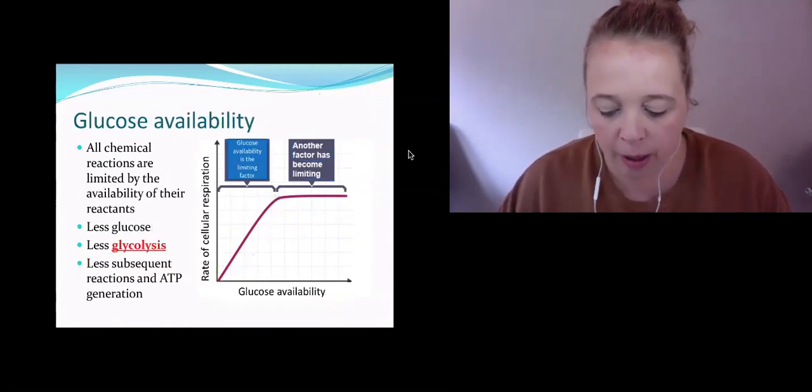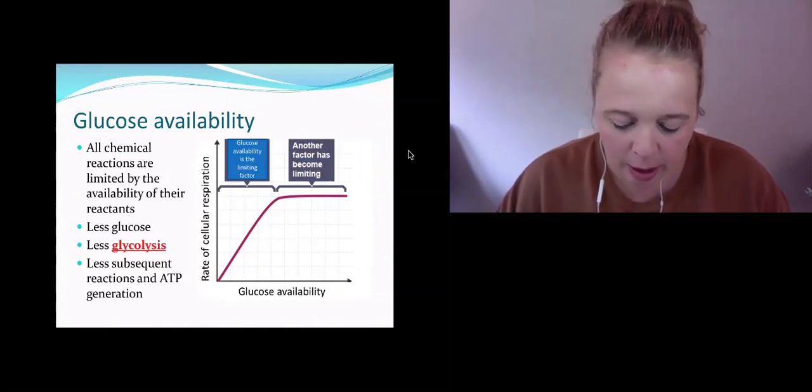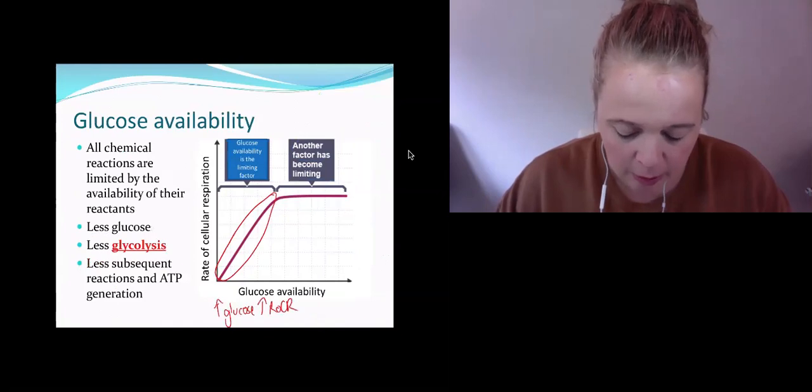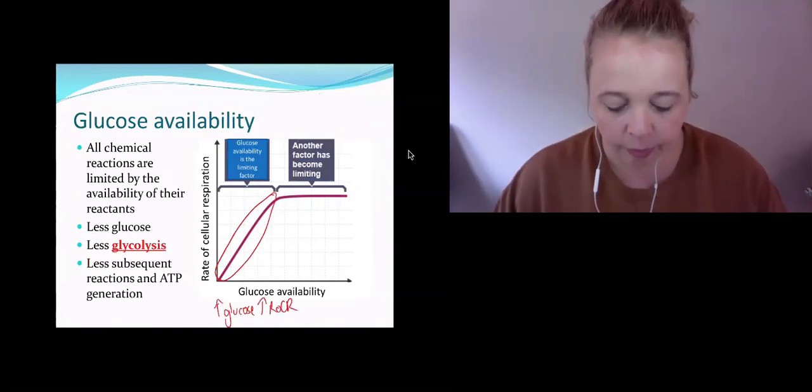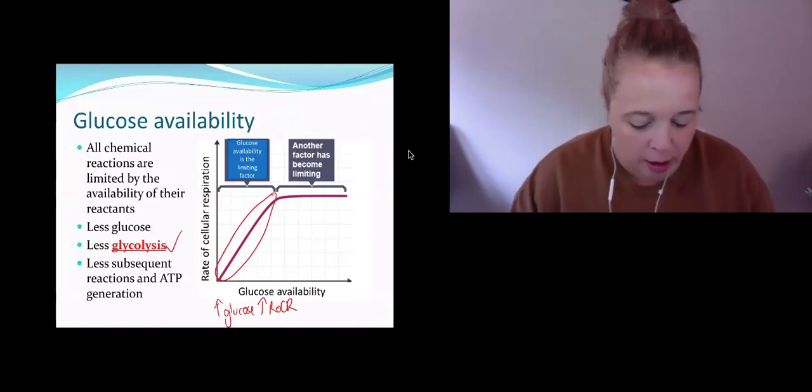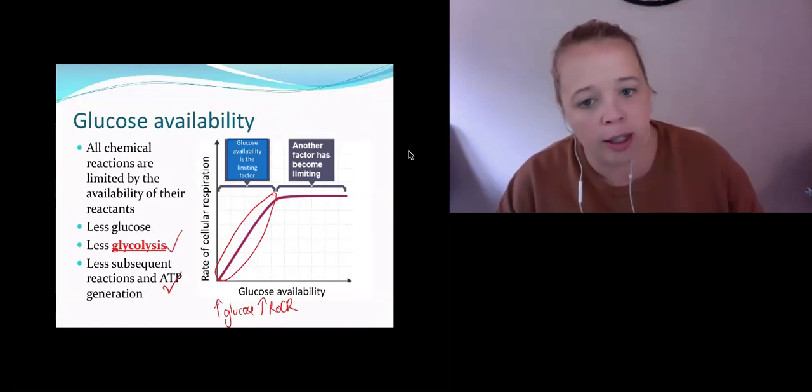The second one that we're going to talk about looks almost the same as that first one. In this section here, as we increase the glucose, we increase the rate of cellular respiration. Why are we doing that? Because we're getting more glycolysis this time, and therefore more ATP generation.